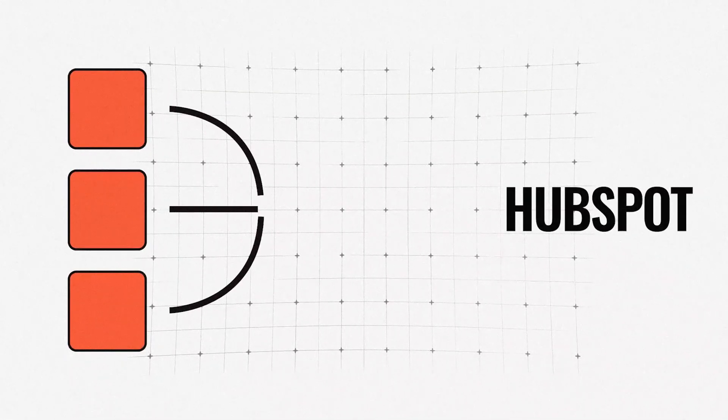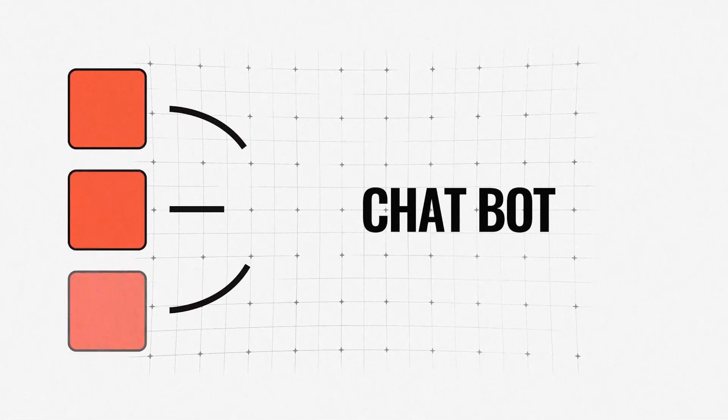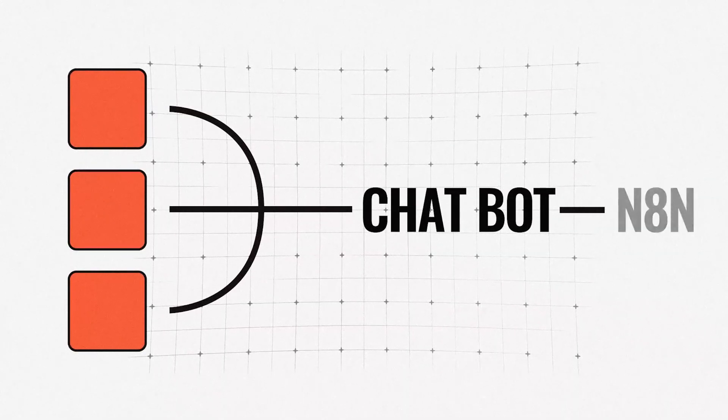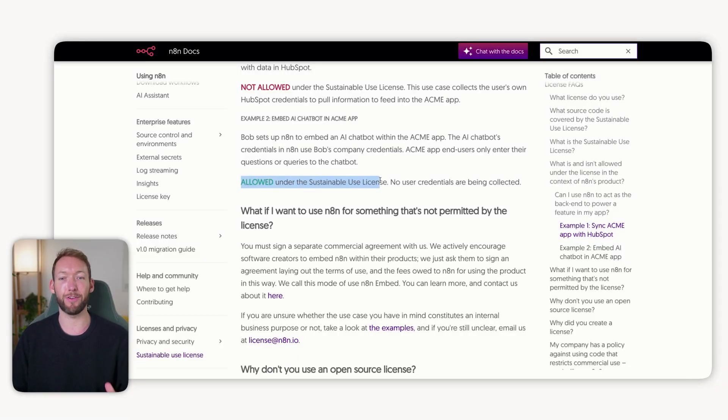For example, we cannot allow a user to access their HubSpot by dynamically passing in their credentials to our N8N workflow — that's not allowed. However, what we can do is host something like a chatbot or a workflow, and our user can interact with that directly from a frontend, as long as it's not taking credentials from that user and inputting them dynamically into our backend, which is our N8N engine. This is allowed under the sustainable use license, as long as no user credentials are being collected.